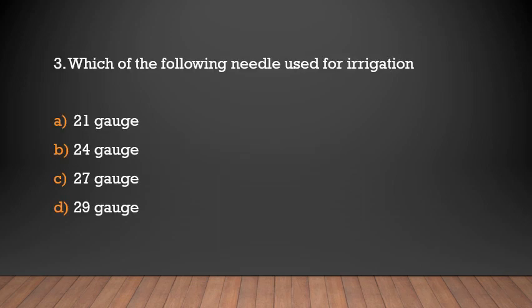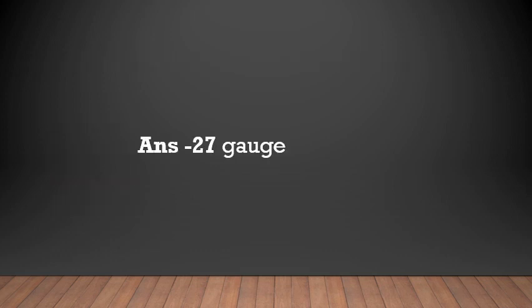Which of the following needle is used for irrigation? Options: 21 gauge, 24 gauge, 27 gauge, 29 gauge. Answer: 27 gauge needle is commonly used for irrigation.